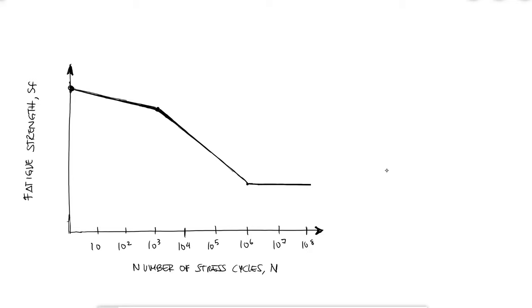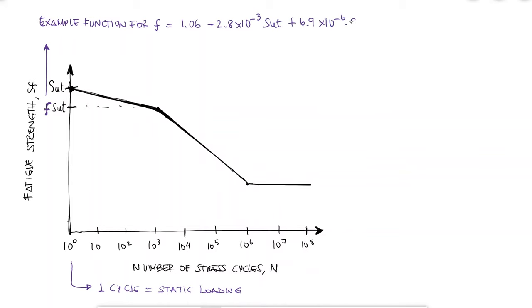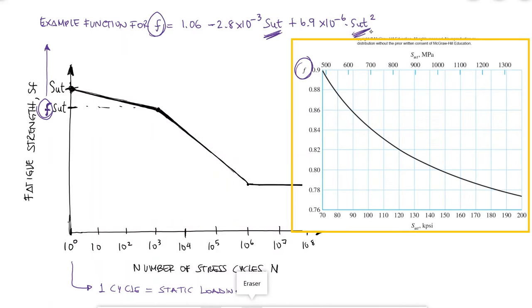The low cycle region for 1000 cycles or fewer is represented by a line that has a gentle slope and that runs between the ultimate strength to a fraction f of the ultimate strength. An initial fatigue strength of SUT makes sense since for a one cycle stress, meaning static loading, would require the stress to reach or exceed the ultimate strength for it to fracture. The values for F are usually a function of the ultimate strength and they are usually found by curve fitting experimental testing. They can either be the equations from the curve fit or the curve itself.